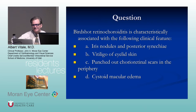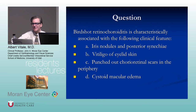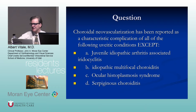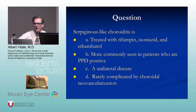Board questions on birdshot: the most common cause of visual loss is macular edema. Vitiligo of the eyelid is characteristic of VKH. Choroidal neovascularization can be seen with all of these diseases except JIA, which is an anterior uveitis. Serpiginous-like choroiditis — the key distinction — is associated with TB.